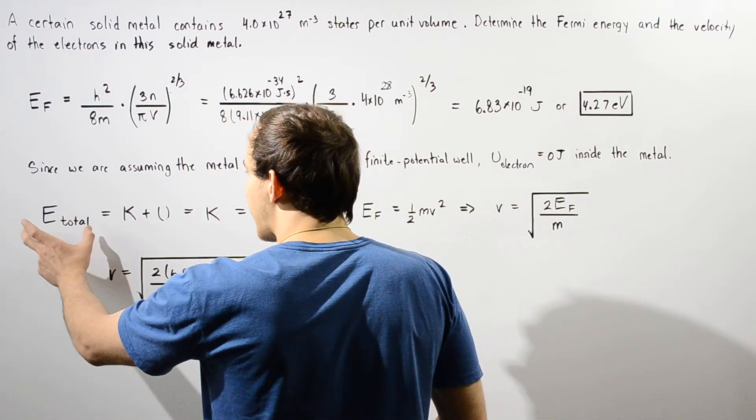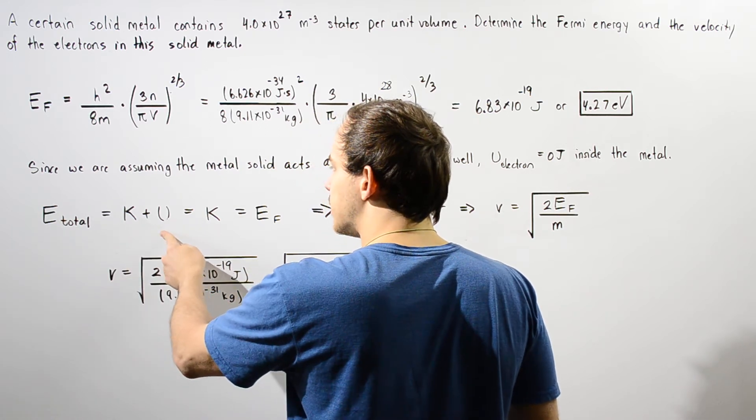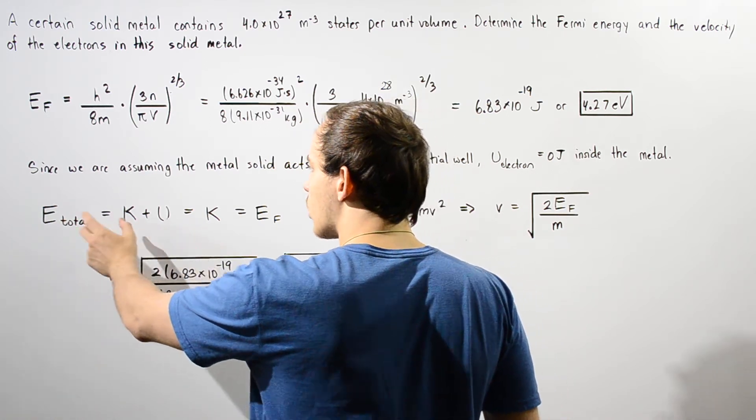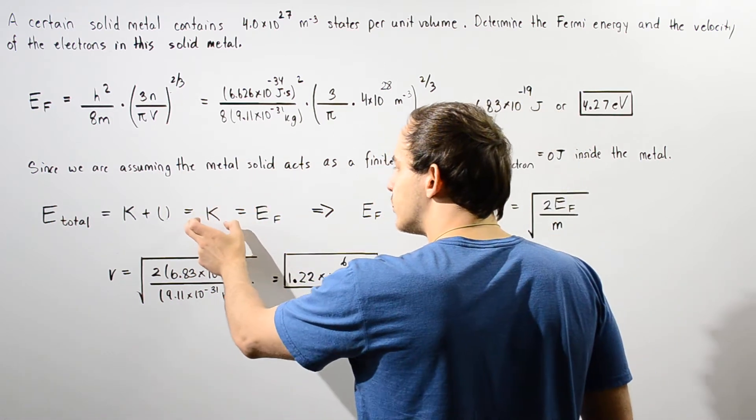That means we can equate the kinetic energy to our Fermi energy that was calculated in the first part. Our k is simply equal to one half mv squared, so we're using the non-relativistic equation for kinetic energy.